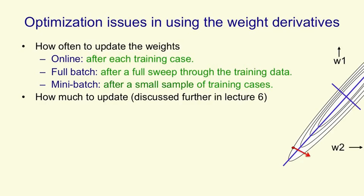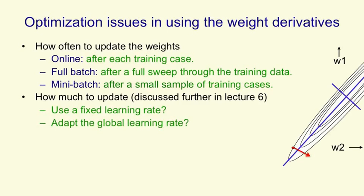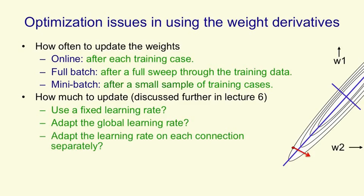Mini-batch learning is what people typically do when they're training big neural networks on big data sets. Then there's the issue of how much we update the weights — how big a change we make. We could just, by hand, try and pick some fixed learning rate and then learn the weights by changing each weight by the derivative we've computed times that learning rate. It seems more sensible to actually adapt the learning rate: if we're oscillating around, if the error keeps going up and down, we'll reduce the learning rate; but if we're making steady progress, we might increase it. We might even have a separate learning rate for each connection in the network so that some weights learn rapidly and other weights learn more slowly.